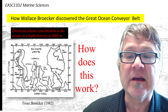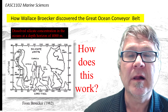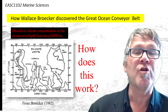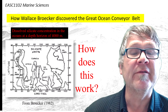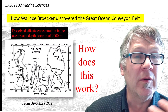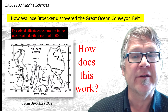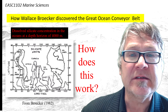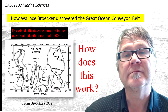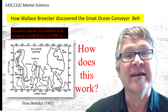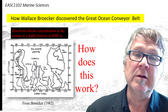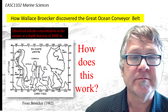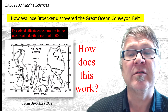This is part B of this lecture. It's about how Wallace Broker discovered the Great Ocean Conveyor Belt. How was it discovered? Broker is a marine chemist. He was interested in the chemistry, interested in the global distribution of chemical properties in the ocean.